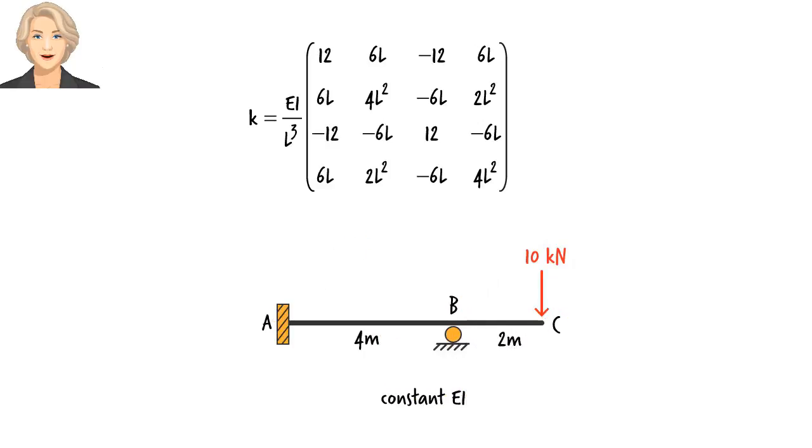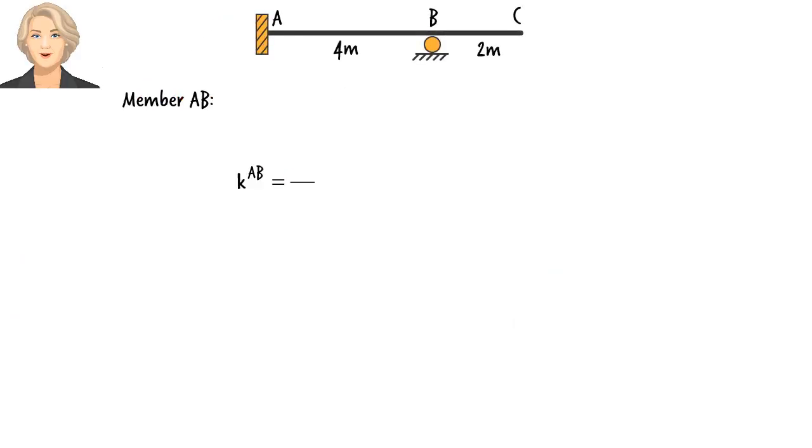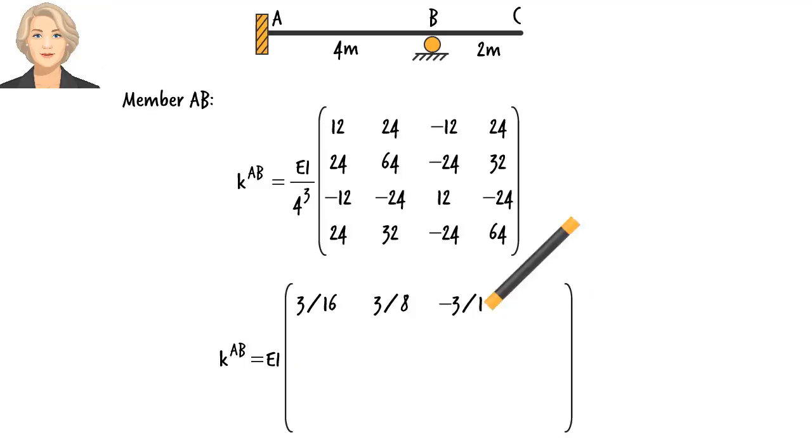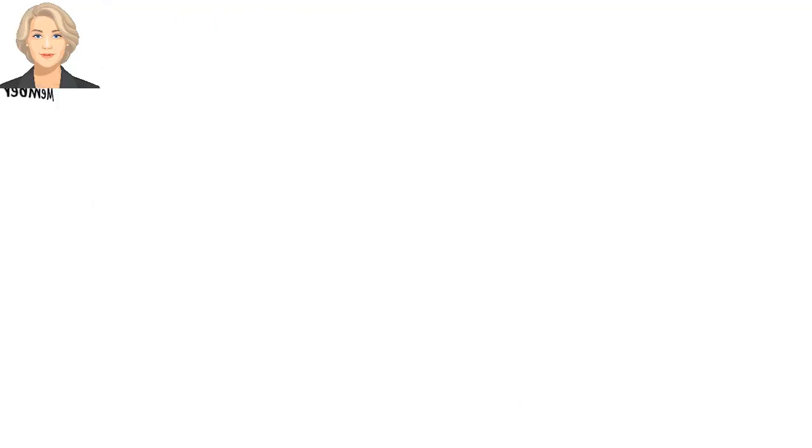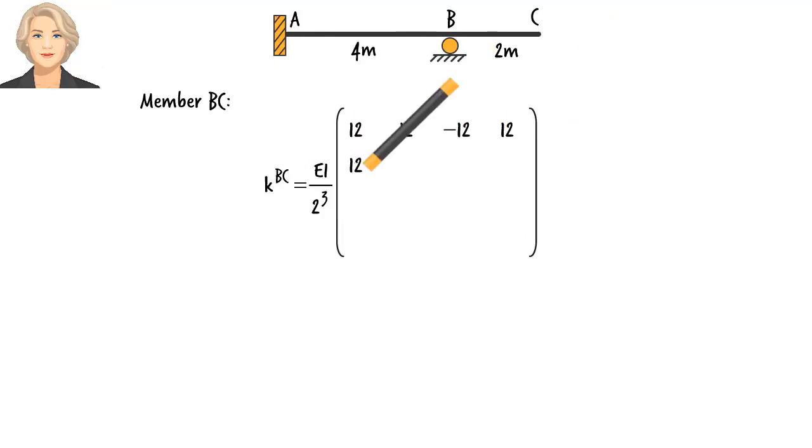For example, this beam has two segments. The left segment has a length of 4 meters, and L for the right segment is 2 meters. So, we need to write two member stiffness matrices, one with L equals 4 and one with L equals 2. For member AB, the stiffness matrix becomes... Or, we can write it like this. For member BC, we can write... and here is its simplified version.